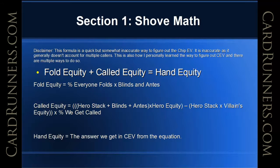The equation is: full equity plus called equity equals hand equity, where full equity is the percent everyone folds times the blinds and antes. Pretty simple and straightforward.